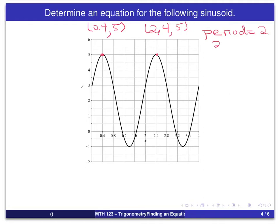And we can use the formula that 2π over b is equal to the period. Solving that, if we multiply both sides by b, we get 2π equals 2b, or b equals π.